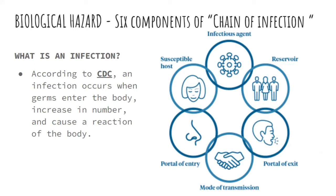There are various hazards encountered in the laboratory — biological, chemical, and many others. Under biological hazard, we will deal with the six components of the chain of infection, which is like the life cycle of diseases and their contributors. Number one is the infectious agent, such as COVID-19, which is a virus and is an example of an infectious agent.